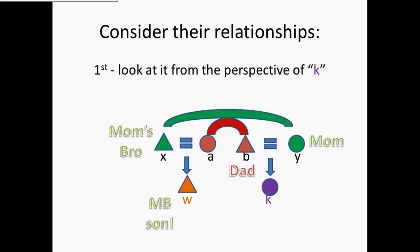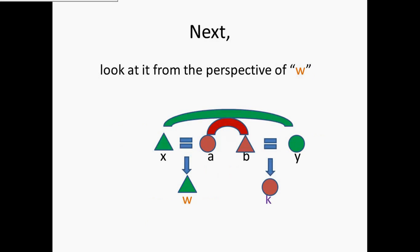We can also look at K's relationship to W through her father, B. B is K's father, and A is father's sister. From that perspective, W is the father's sister's son — that is to say, for K, W is also her patrilateral cross cousin. So from both sides, W is a cross cousin to K: he's both the mother's brother's son and the father's sister's son. And this applies reciprocally.